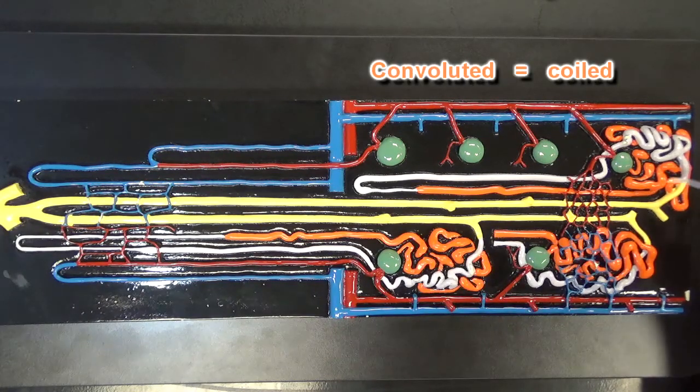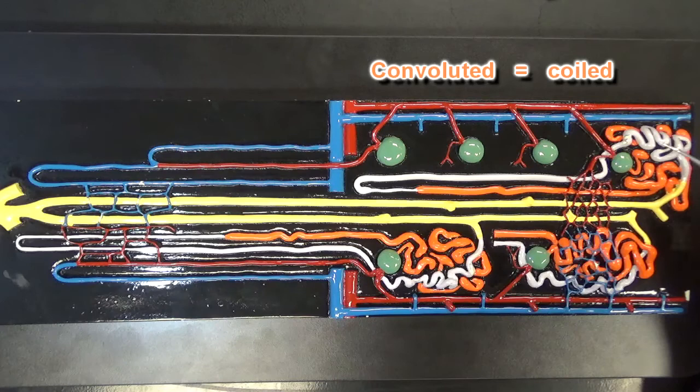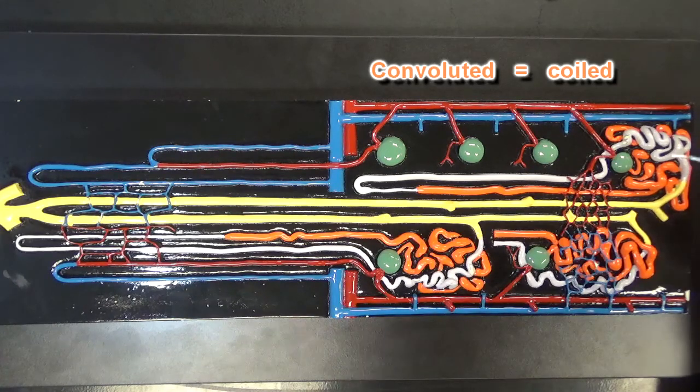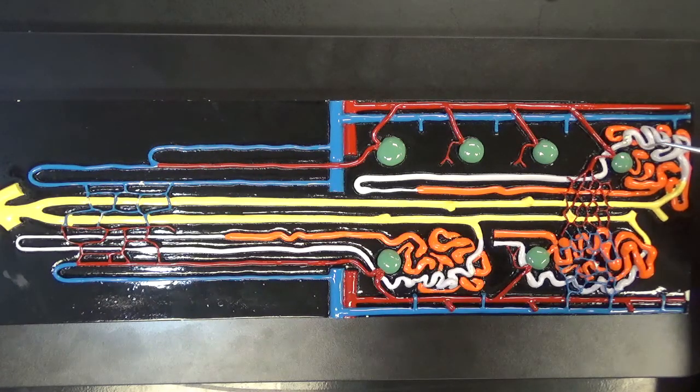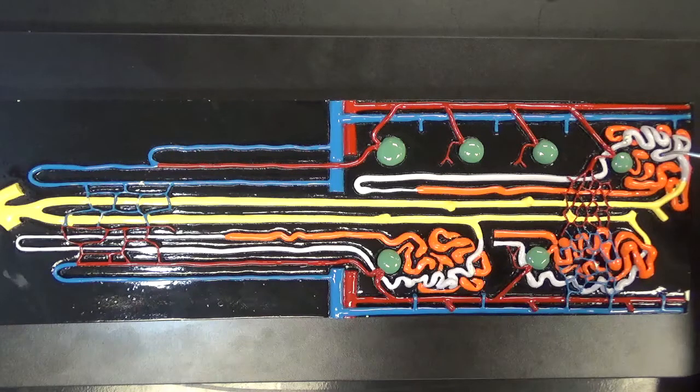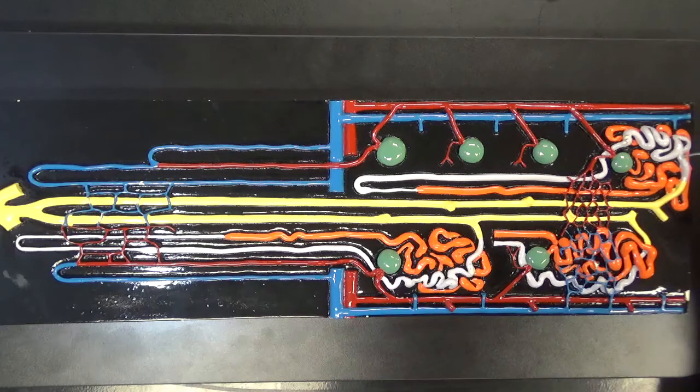If you notice these tubes are coiled here that's where they get their name from. Now going back to this distal convoluted tubule right here, this distal convoluted tubule is going to dump the filtrate into the collecting duct right here.